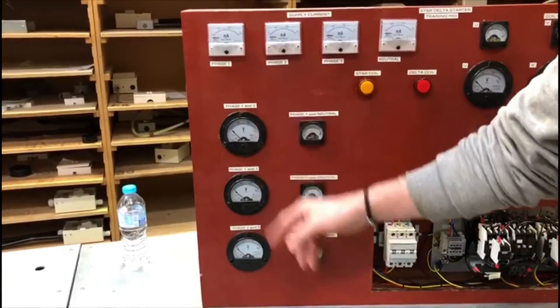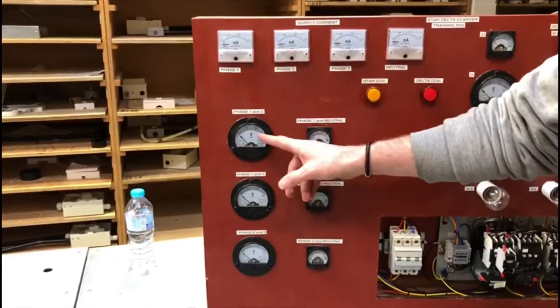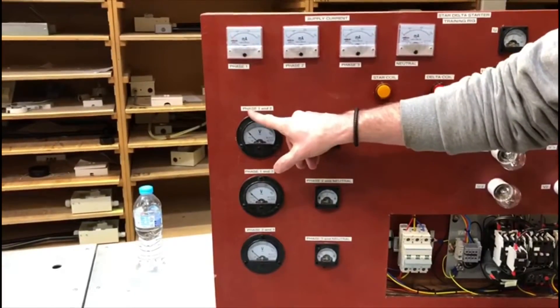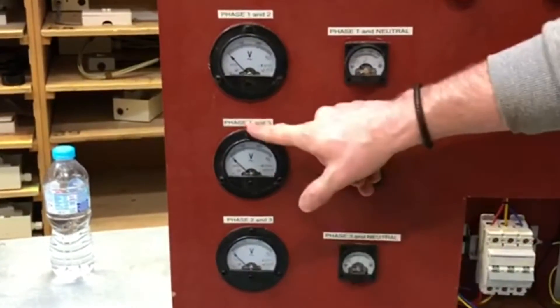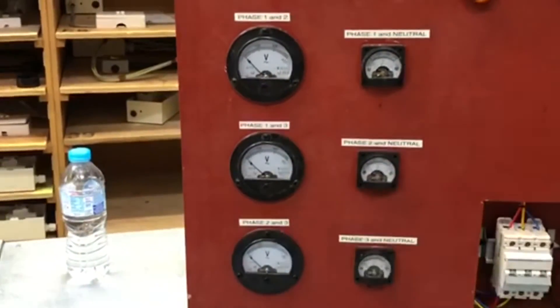If you look on the left-hand side, you have these three panel voltmeters. It's labeled on there which they are, so these are the voltages between the phases. For example, phase one and phase two, phase one and phase three, and phase two and phase three.